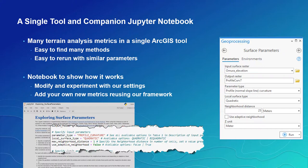This presentation is a brief explanation of a new Jupyter Notebook and its corresponding ArcGIS tool we shipped earlier this year. The Notebook computes slope, aspect, and seven types of curvature. This single-tool approach makes it easy to find many methods, easy to rerun with similar settings, and easy for us to add new metrics in the future. We've provided the Notebook because we've introduced some newer ideas and want everyone to see how it works, and provide the opportunity for people to modify and experiment with our settings, or to add your own new terrain metrics by just plugging in a formula and reusing the rest of our framework.